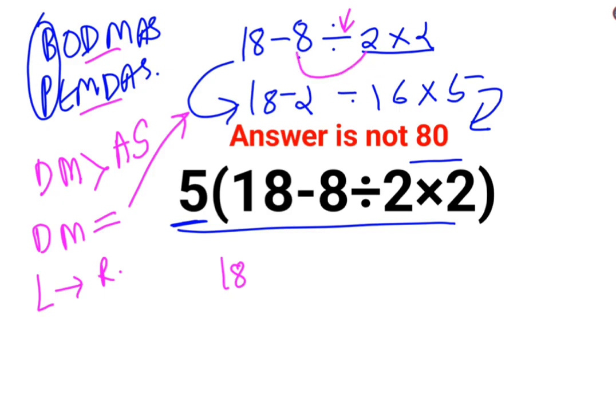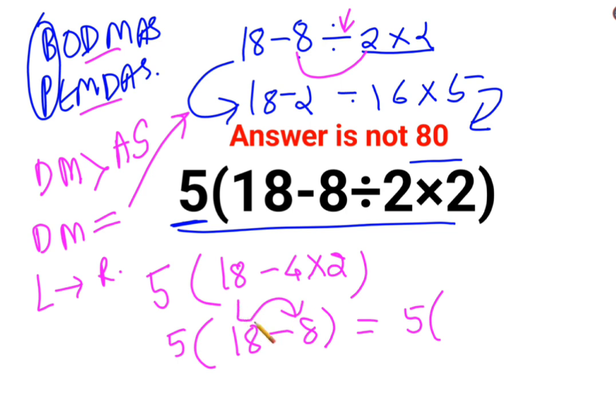18 minus 8 divided by 2 is minus 4. 8 divided by 2 is 4. And then we had to multiply it with 2. Okay, so now we had 5 on the outside. We will keep 5 on the outside. 18 minus 4 into 2 is what? 18 minus 8.